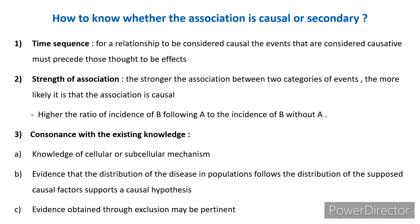The stronger the association between two categories of events, the more likely it is to be causal. Strength is measured by the ratio of the incidence of B following A to the incidence of B without A. For example, A is smoking and B is cancer: compare the incidence of cancer following smoking versus the incidence of cancer without smoking. If this ratio is high, the strength of association is strong and it is more likely to be a causal association.